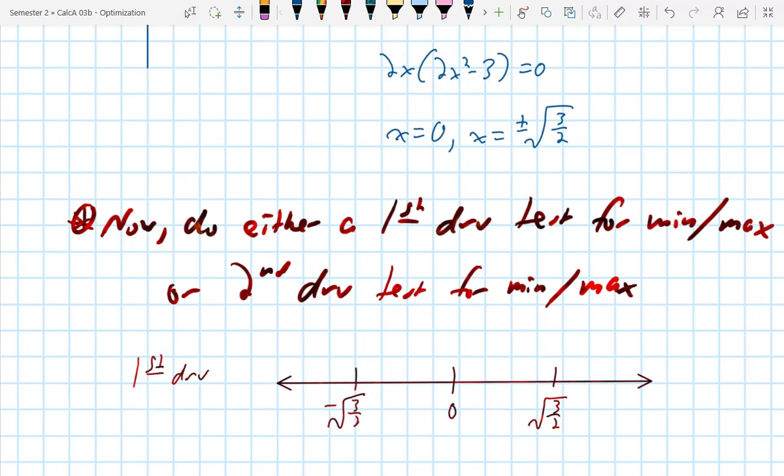So remember on that very first quiz, some of you guys were plugging them back into the original function. I'm plugging it into the first derivative and trying to see what's the sign of the first derivative. So here's the first derivative in sort of pseudo-factored form. If you wanted to put that completely in factored form, you'd write it as 2x, (x minus root 3 halves), and (x plus root 3 halves).